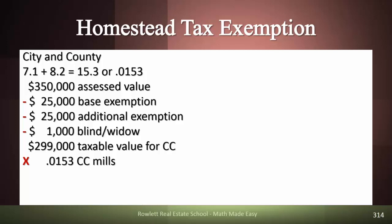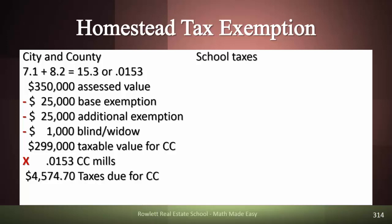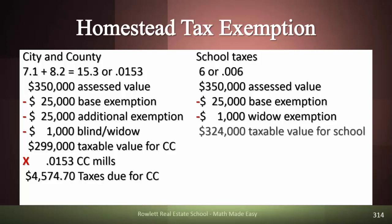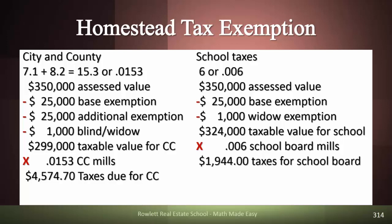We multiply the $299,000 taxable value by .0153, giving us city and county taxes of $4,574.70. Then we do the same thing on the school board side. The school board was six mills, or .006 in decimal form. Take the $350,000 assessed value, subtract the base $25,000 homestead exemption and another $1,000 for the blind widower — that leaves a taxable value of $324,000. Multiply by .006 and the school board taxes are $1,944.